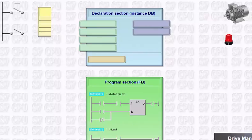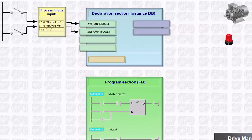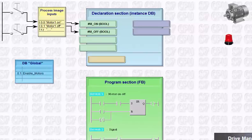The inputs are addressable via the memory area of the process image and are connected with the input parameters of our block. A program-wide uniform enable signal for all motors is located in a global data block and is also connected to the input parameter.